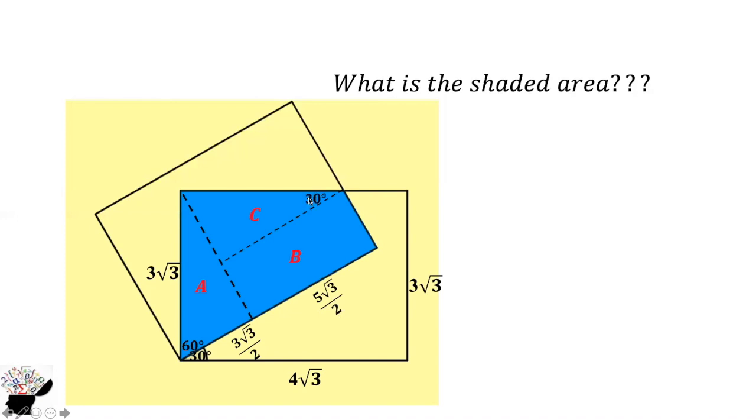Now this angle is already 30 and we know that this length is the same as this length, so we can use tan. Tan is the opposite and this is the adjacent.